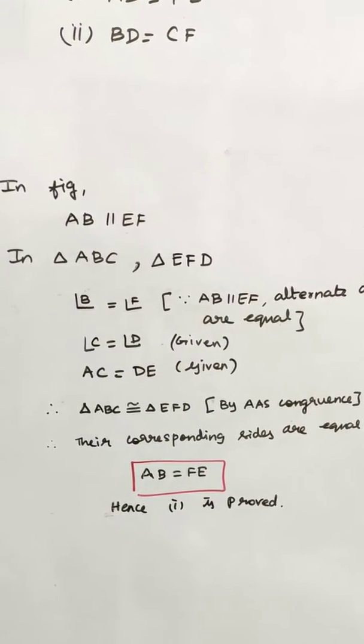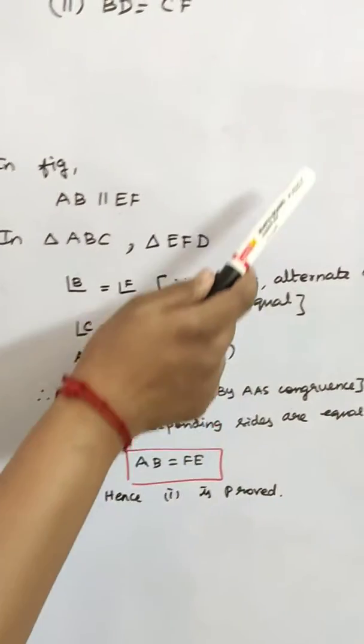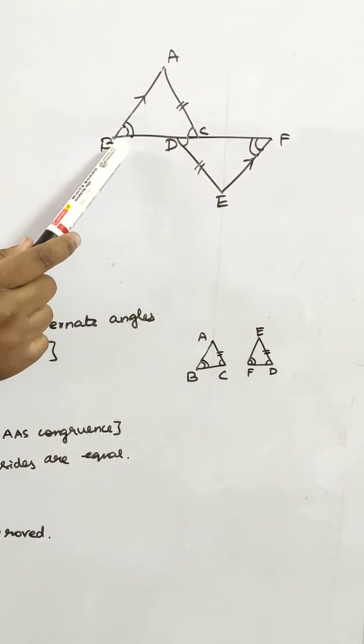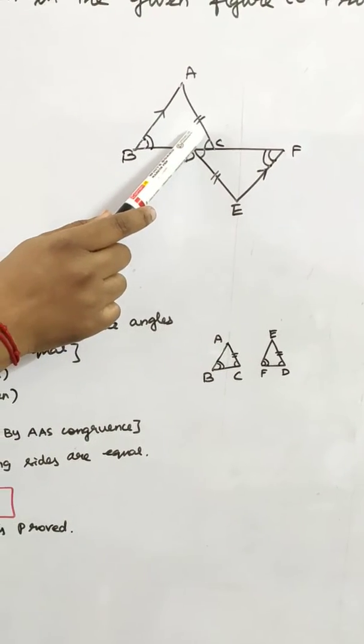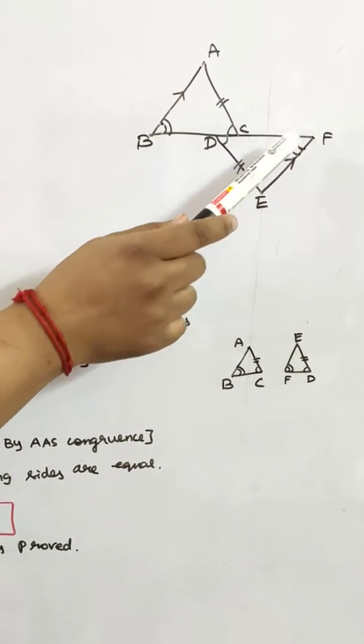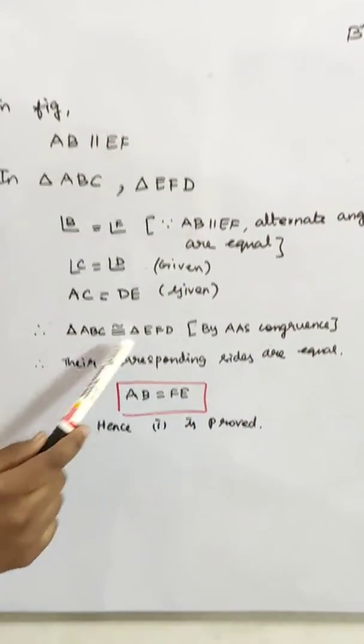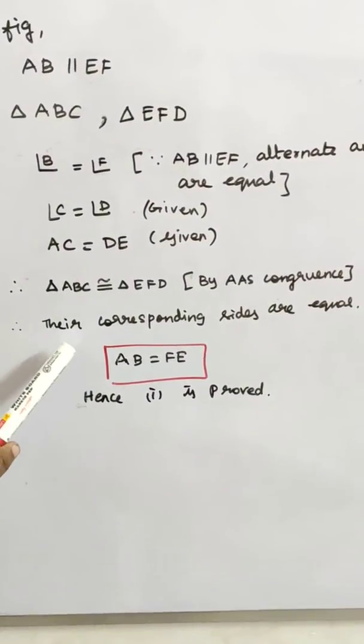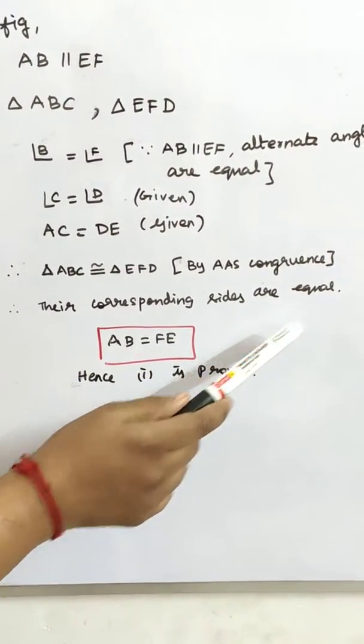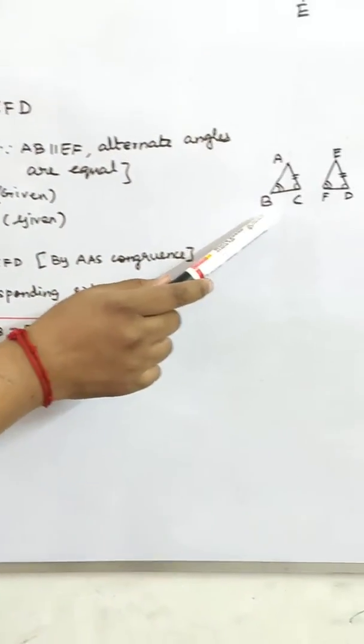AC equal to ED is given. So angle B opposite side is AC, and angle F opposite side is ED. So by AAS congruence, these two triangles are congruent. So their corresponding sides are equal.